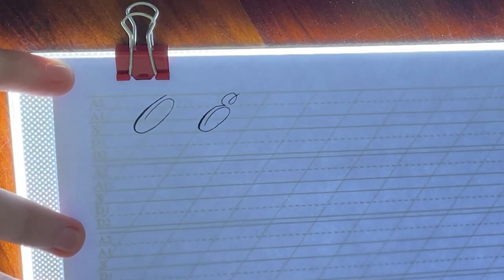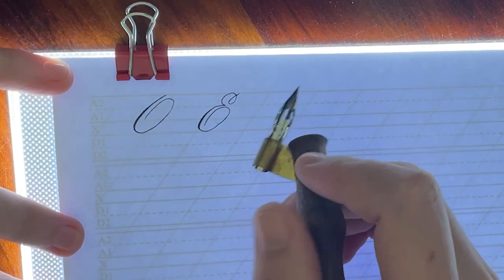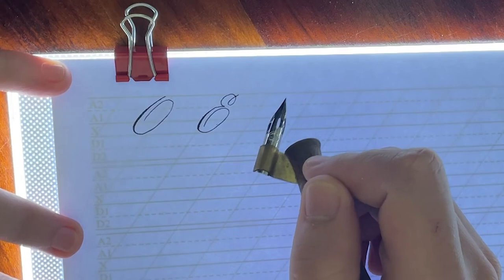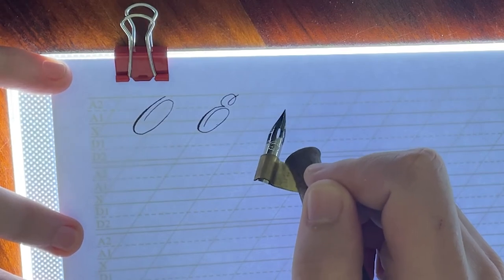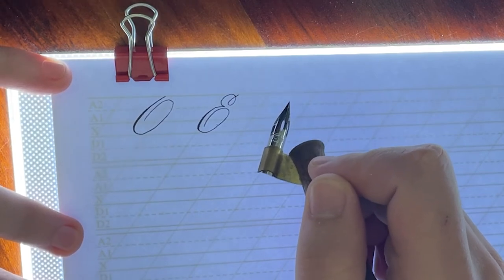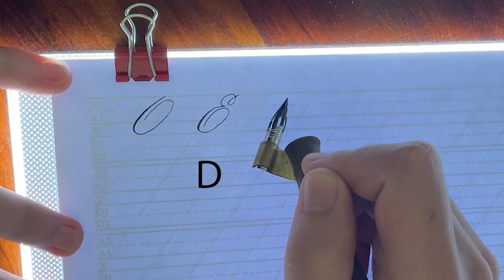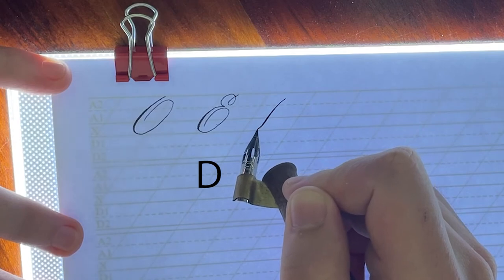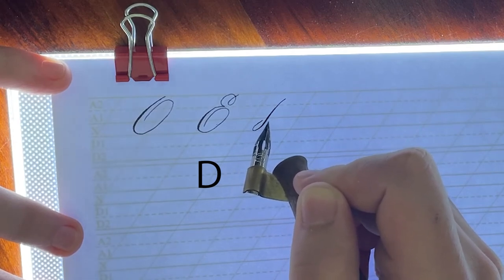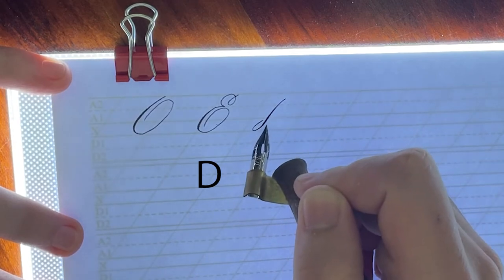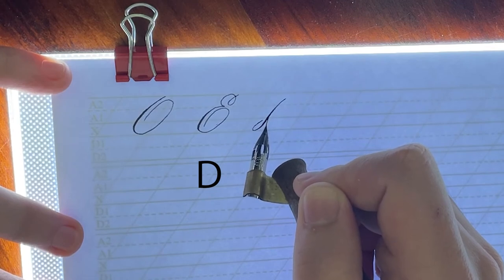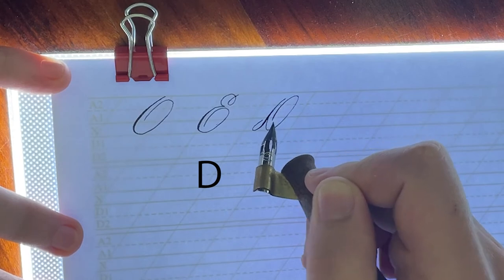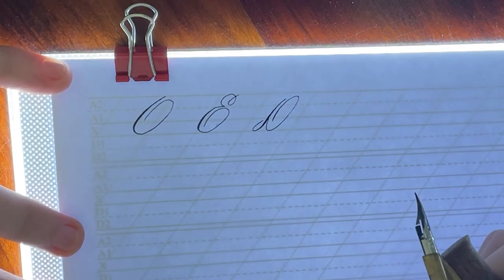Now for capital D, it's a little different. For the capital D, we start in between the first ascender and the second ascender. We go down, shading, up, lift off, back in. And there's your capital D.